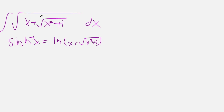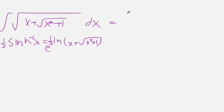So we'd like to manipulate it in some way. We can do that by noticing that if we have a square root, that's the same thing as multiplying by one half on the outside of the natural log. And to get rid of the natural log, we can just raise both sides to the e power. And so we can rewrite this integral as e to the one half inverse hyperbolic sine of x, dx.